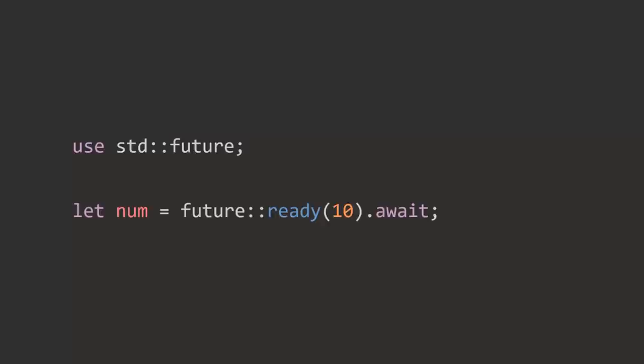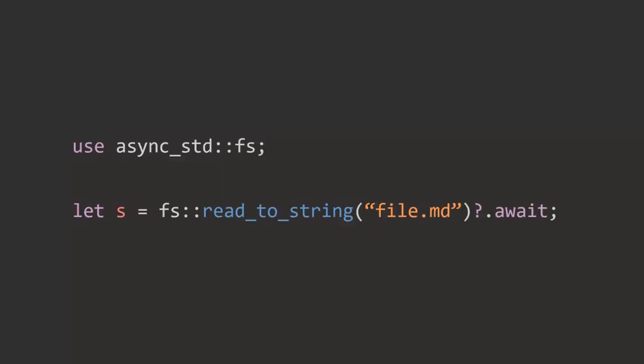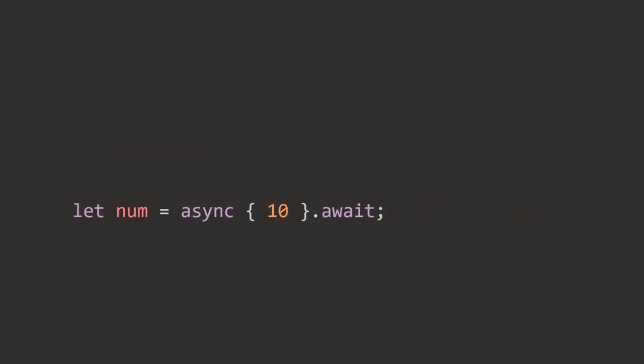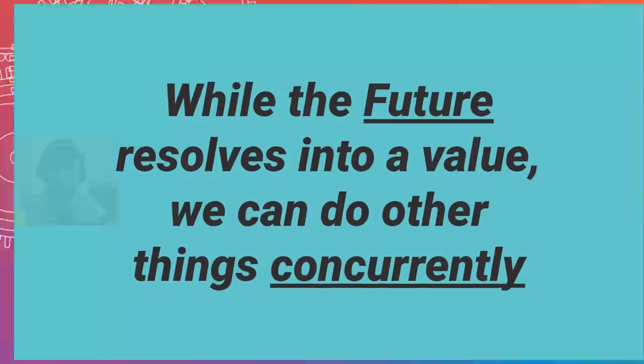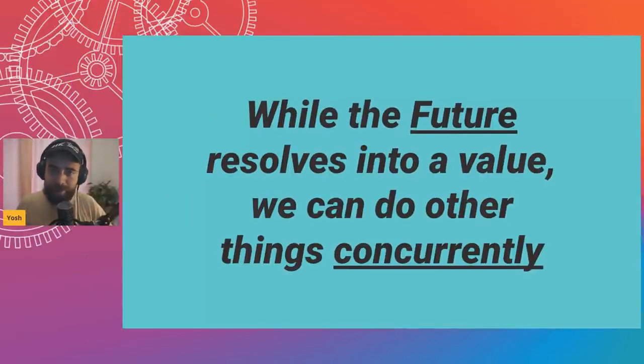You can also manually create a future using the ready function — same result. Instead of resolving to a number, you could be doing something more interesting like reading a file asynchronously or making network requests. That's the main takeaway of what a future is: while a future resolves, we can do other stuff concurrently.